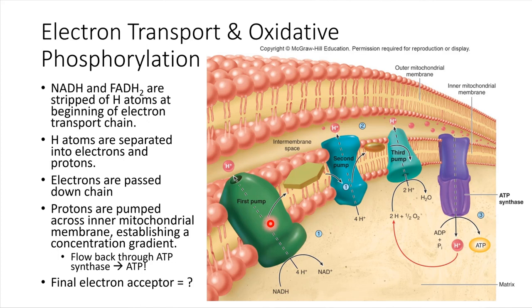So this electron, it's going to get passed from the first pump down the chain, it's going to end up at the second pump, and then finally to the third pump, so on and so forth. Why are we calling these pumps?